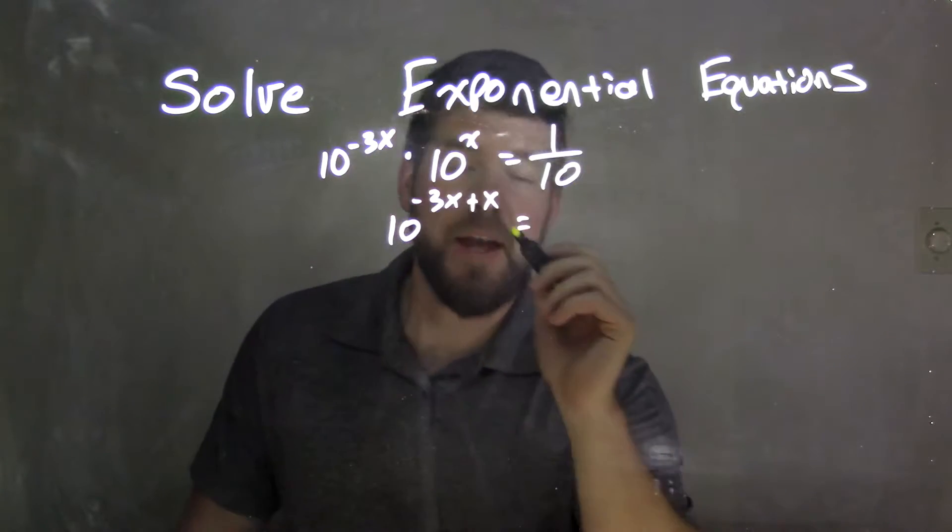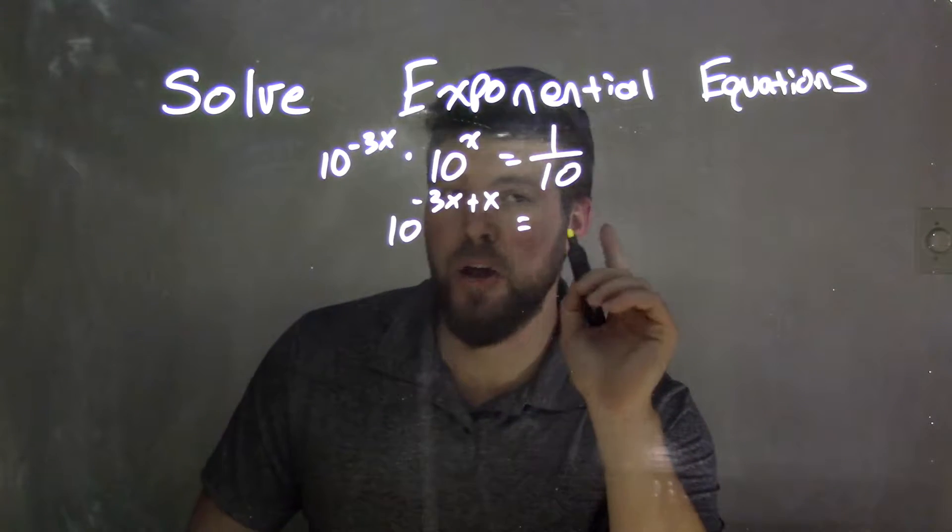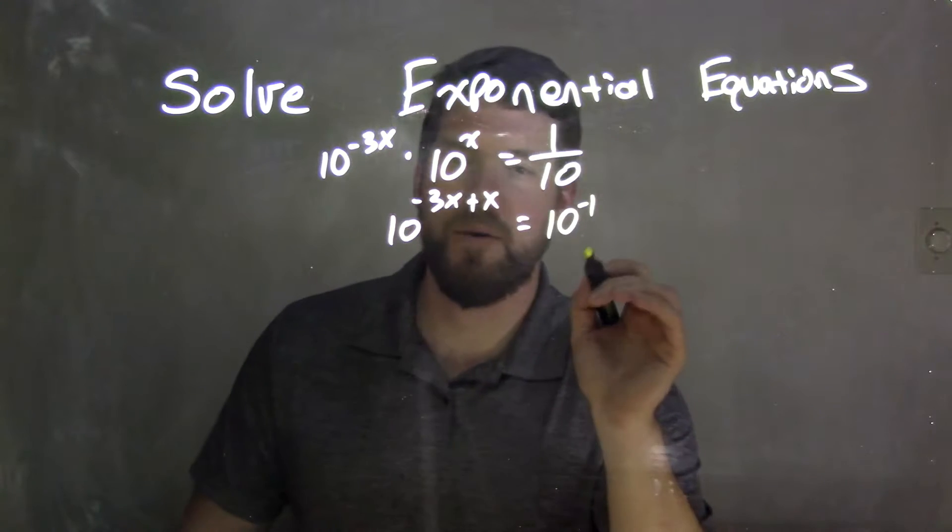That is equal to, now this right-hand side, I have 1 over 10. 1 over 10, we know, can be rewritten as 10 to the negative 1 power.